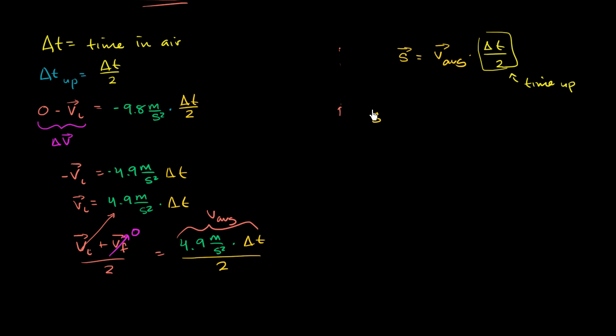So let's stick that back over here. So our maximum displacement is going to be our average velocity. So that is 4.9 meters per second squared times delta t, all of that over 2. And then we multiply it again times the time up. So times delta t over 2 again.